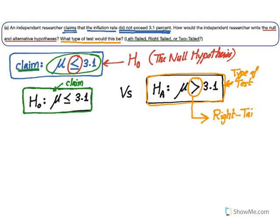Because the alternative hypothesis has strictly greater than, this is a right-tailed test. To summarize: if the alternative has strictly greater than, it's right-tailed; strictly less than, it's left-tailed. Always look at the alternative hypothesis to decide on the type of test.